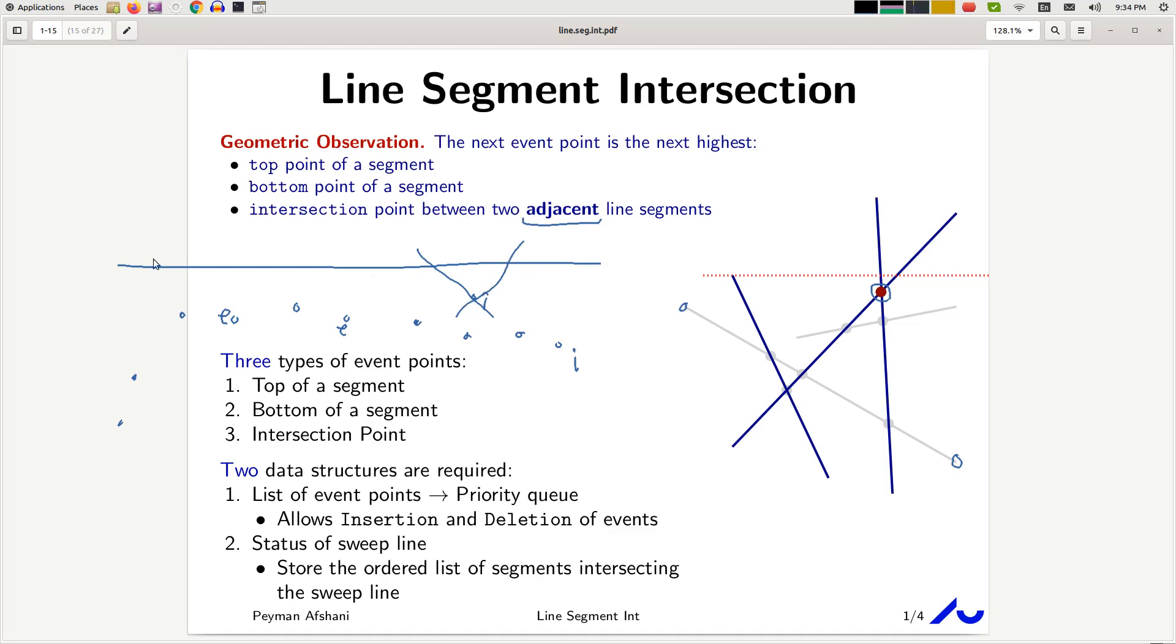And what adjacent means is adjacent on the sweep line. So in other words, when I look at the current order on the sweep line, there is no other segment between them intersecting the sweep line. So that's what it means. If the next event point is an intersection event point, then it must be the event point formed by intersection of two adjacent line segments. This is what the lemma says.